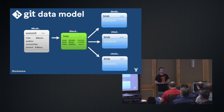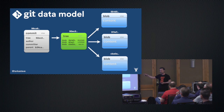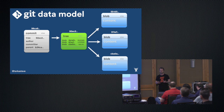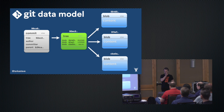A blob is nothing more than the contents of an object — it's zlib compressed, it has a header stuck on it to help identify it on the file system, and it is SHA1 hashed, which identifies it. That's where the content-addressable file system comes in. The next level up is the tree. A tree is also a blob, but it's a blob where git understands the content — it points at other blobs, potentially other trees, and gives them file names and additional metadata like file permissions.